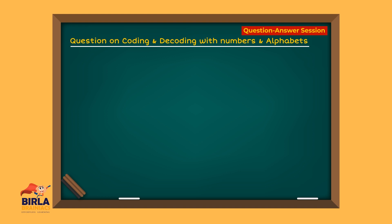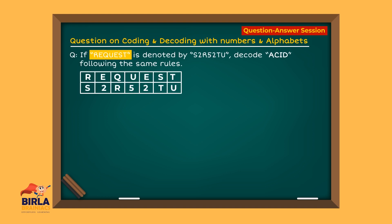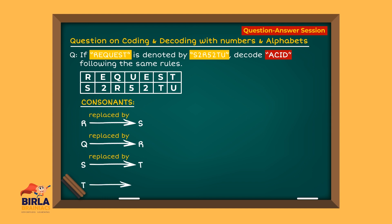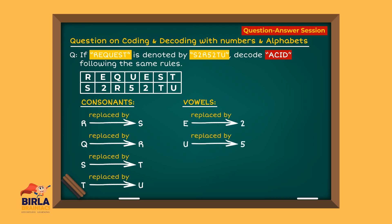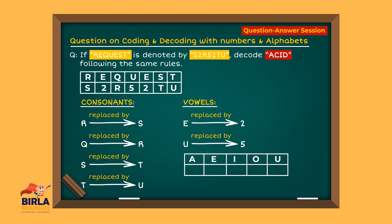Let's look at a question on coding and decoding with numbers and alphabets. If 'request' is denoted as s2r52tu, decode 'asset' following the same rules. Here you can see consonant R is replaced by S, Q is replaced by R, S is replaced by T, T is replaced by U, and vowels: E is replaced by 2 and U by 5. First find out the reason behind it. There are 5 vowels — A is 1, E is 2, I is 3, O is 4, and U is 5 — so vowels are replaced by their position.